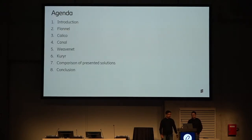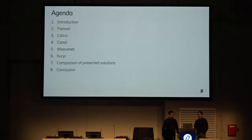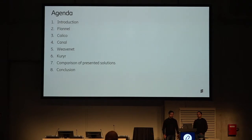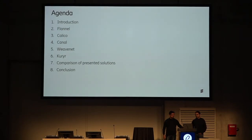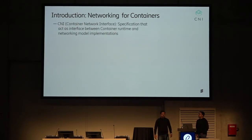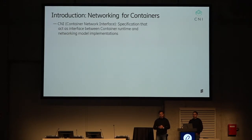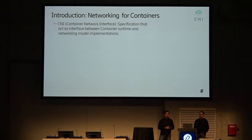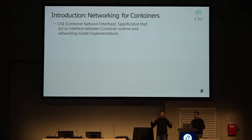So what are we going to cover? What are the fabrics? It is Flannel, Calico, Canal, WeaveNet, and Courier — a comparison of what each of them have and do not have. Before we start off, an introduction into containers. There are various networking solutions and container solutions as well, including orchestration services like Kubernetes and RKT.